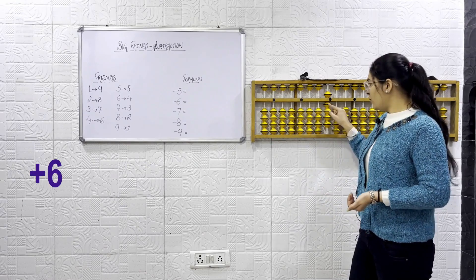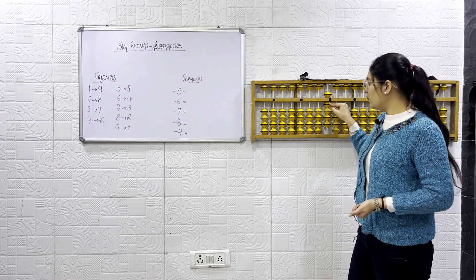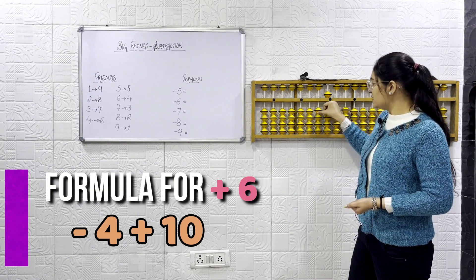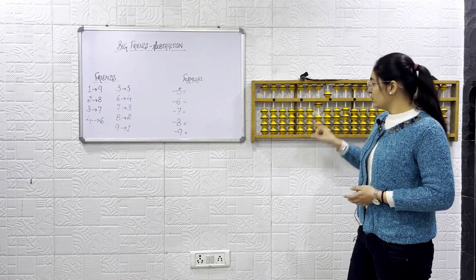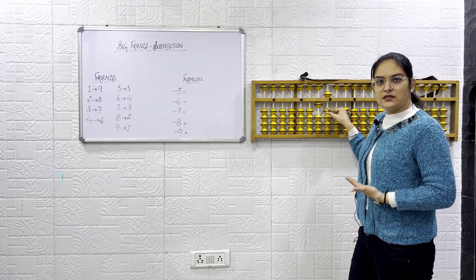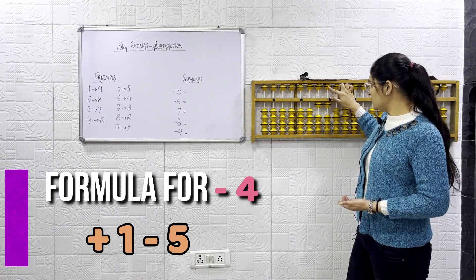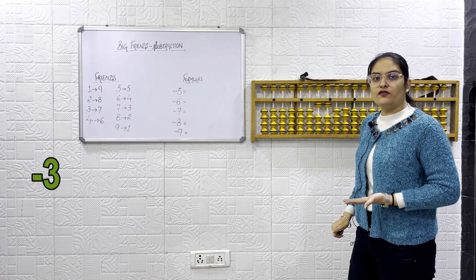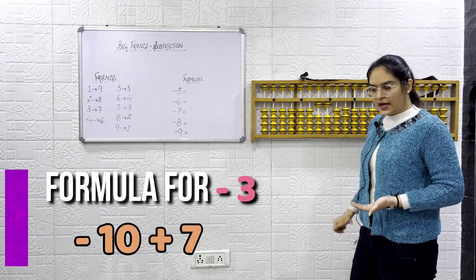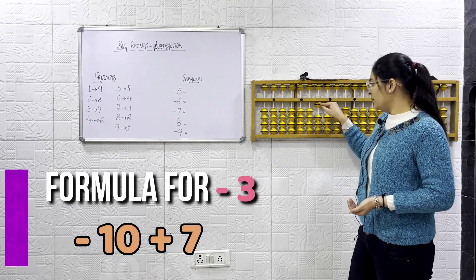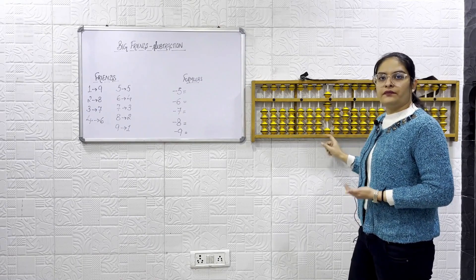Plus 6. Formula for plus 6 will be? Friend of 6 will be? 4. Formula will be minus 4 plus 10. Now, minus 4. Minus 4 formula will be plus 1 minus 5. Now, minus 3. Formula for minus 3 will be minus 10 plus 7. Answer is 8.